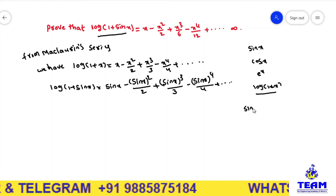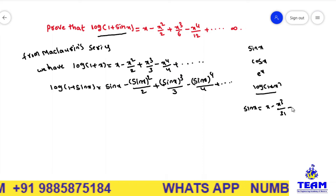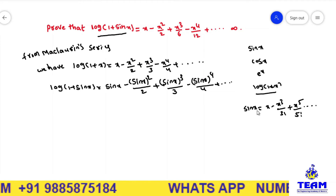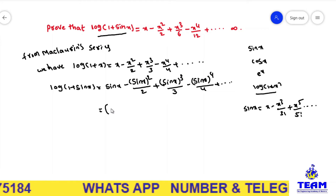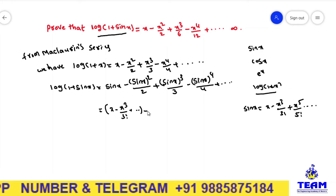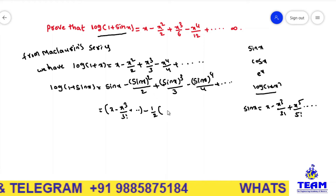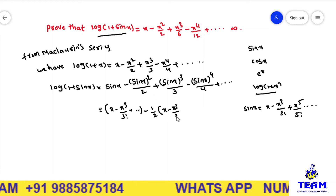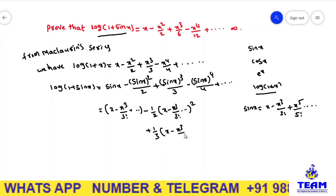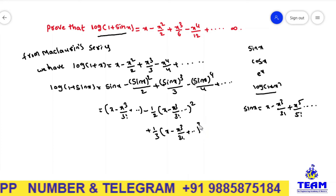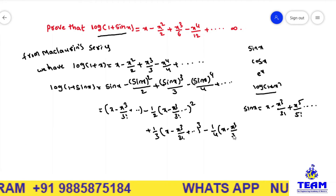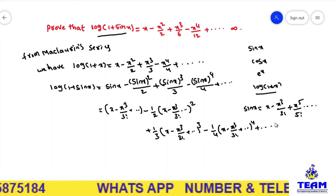We know that the expansion of sin x is x minus x cubed by 3 factorial plus x to the power of 5 by 5 factorial and so on. Now using this expansion, sin x can be written as x minus x cubed by 3 factorial plus so on. Then minus 1 by 2 times of sin x expansion, which is x minus x cubed by 3 factorial, whole squared, plus 1 by 3 times of sin x expansion whole cubed, minus 1 by 4 times whole to the power of 4, plus so on.